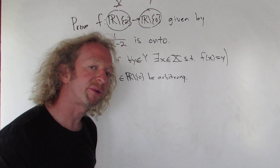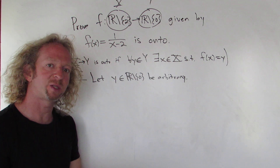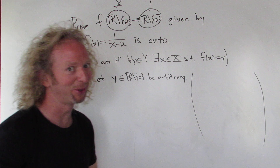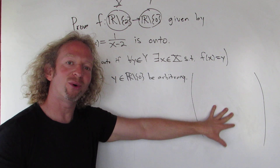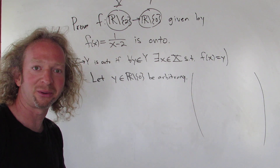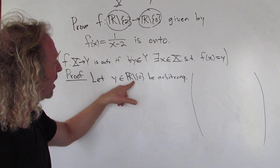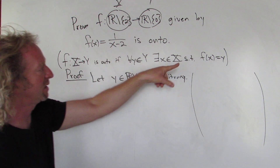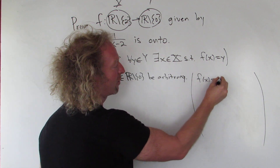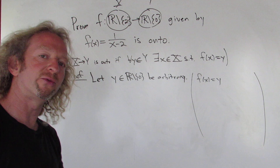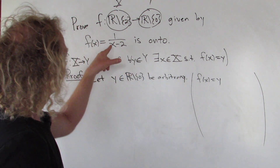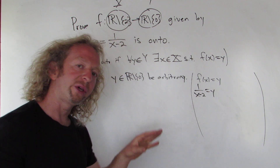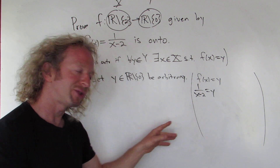Now we have to find little x — here's where the work takes place. I'm going to go through the scratch work of finding little x. We want f of x equal to y. So f of x is 1 over x minus 2, and that equals y. Note: this is not the proof — we're working backwards, but this is how you figure out the proof, which is really important.